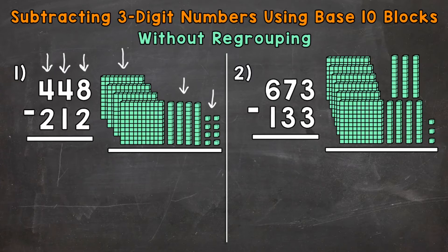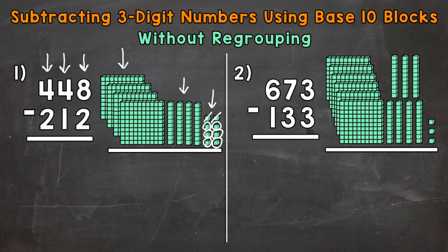Now we need to subtract that 212. When we subtract whole numbers we always start with the ones place. So we have 8 ones minus 2 ones — let's subtract or take away 2 ones: 1, 2. How many do we have left? 1, 2, 3, 4, 5, and 6. So we put a 6 in the ones place in our answer.